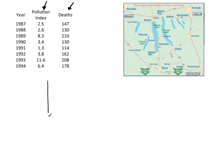I'm going to set up a vertical axis here and then a horizontal axis. Now on the horizontal axis, I'm going to put the pollution index. The smallest value is 2.5, the biggest is 11.6, so I'm just going to go by ones. Now the vertical axis, the smallest is 130, the highest is 208, so I think I'll start at 100.